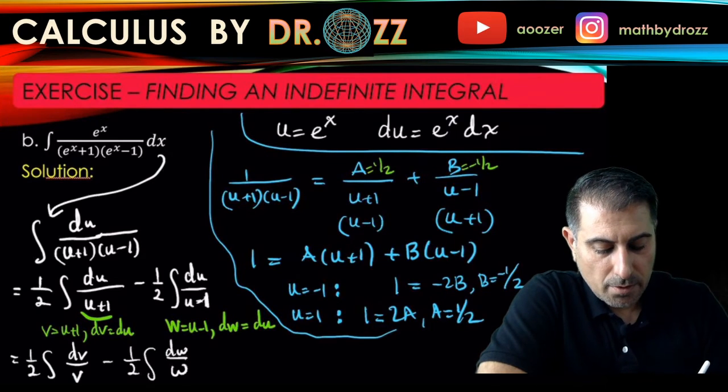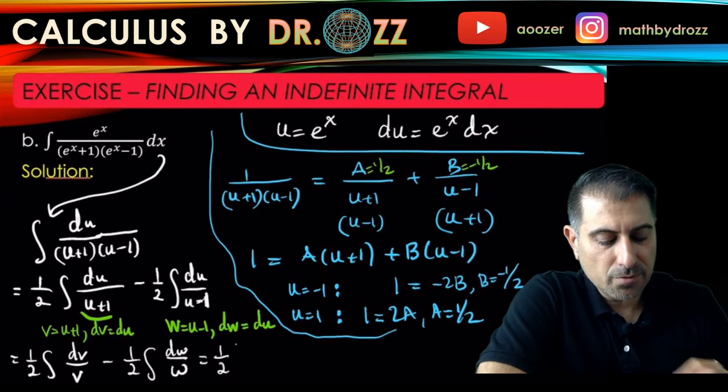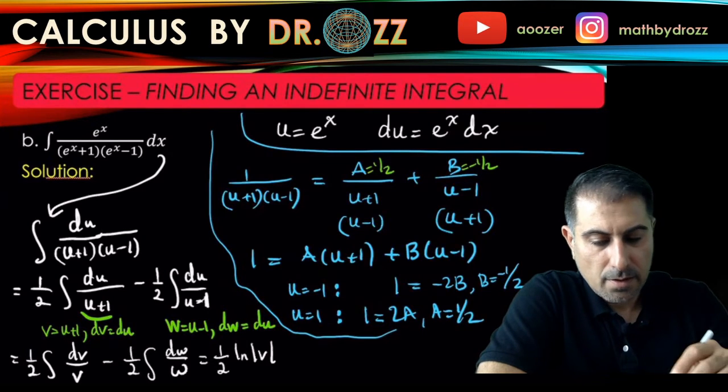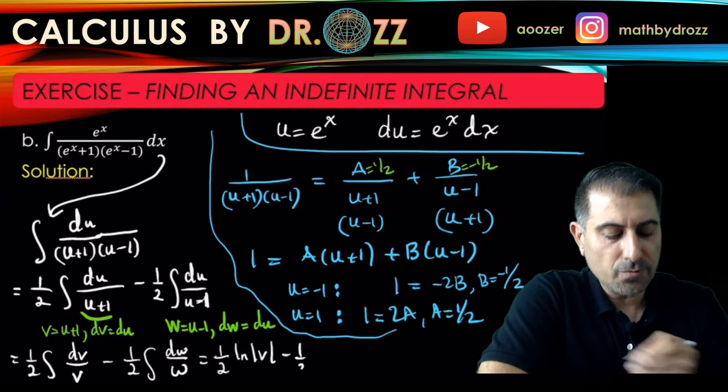Okay good, so this is 1/2 ln of absolute value of v minus ln absolute value of w.